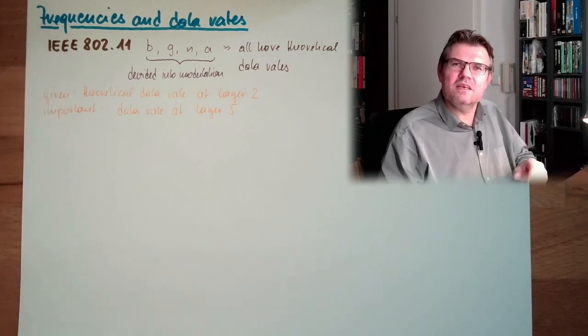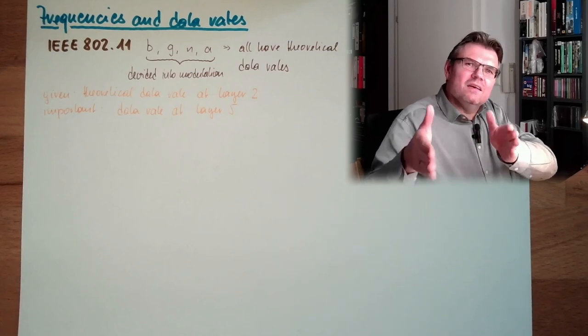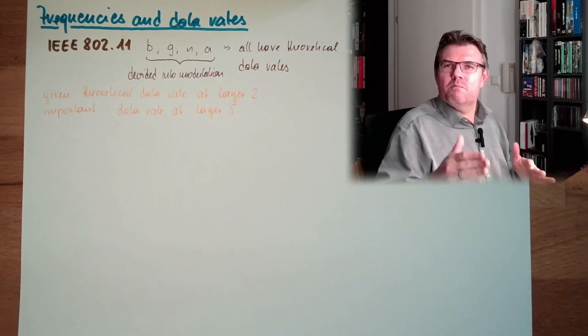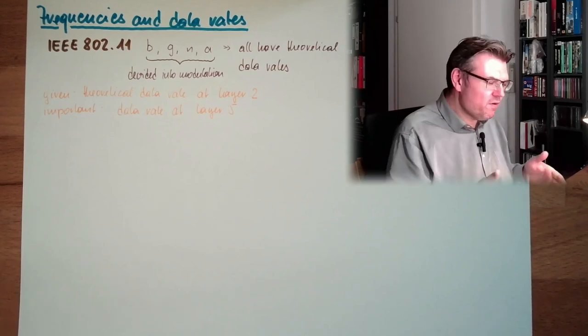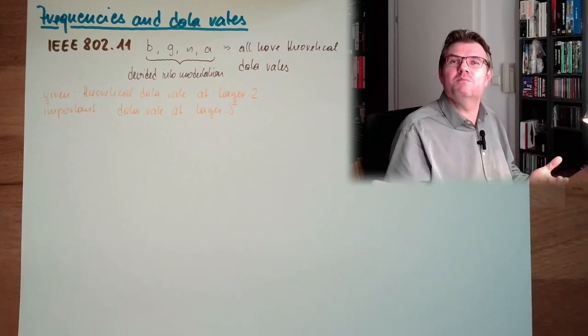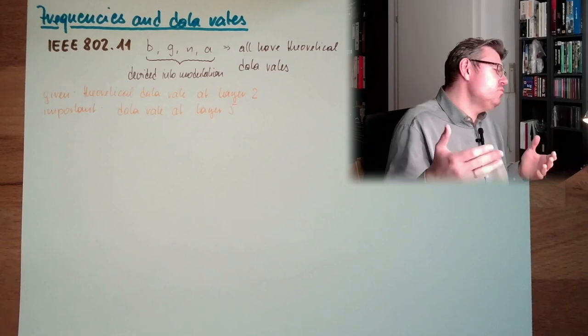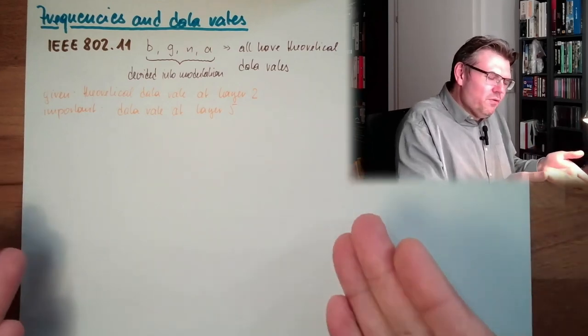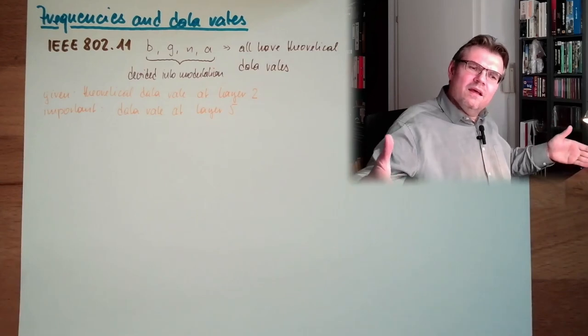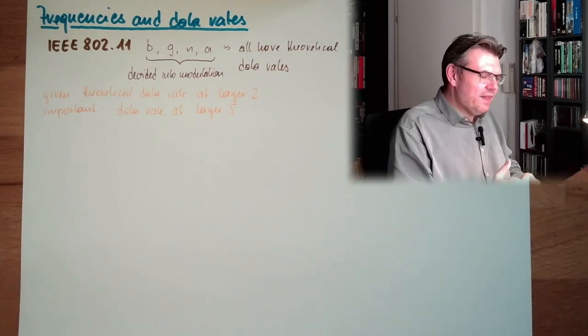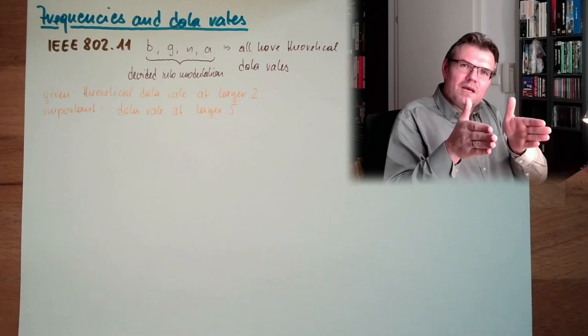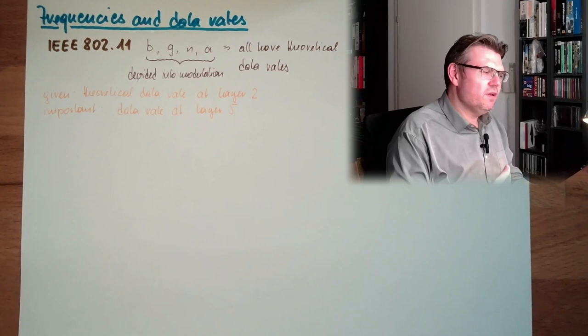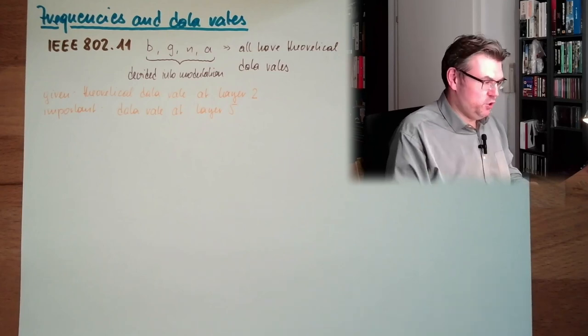There is a difference because each protocol adds headers, some prefixes or postfixes or whatever additional information which is necessary to do stuff. So from the layer two data rate, less is at layer five available because all sub-layers add their own prefixes, postfixes, and additional information.